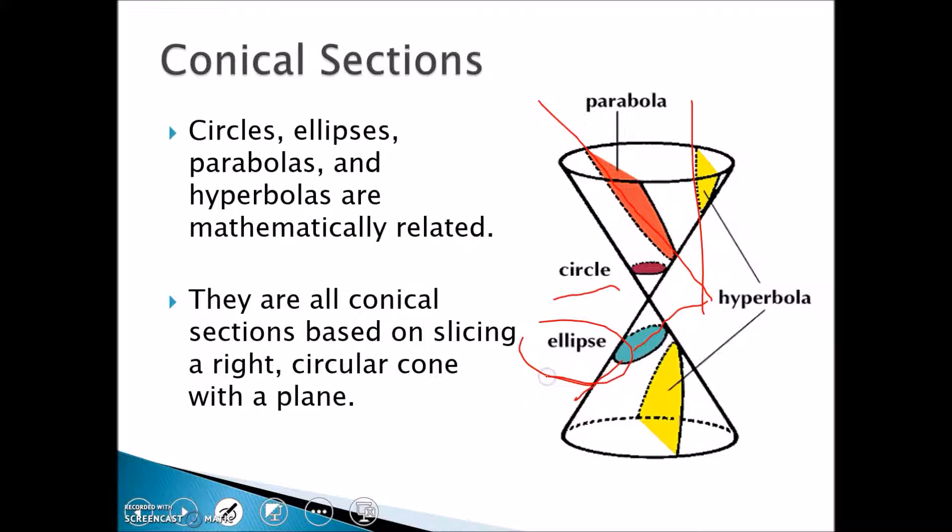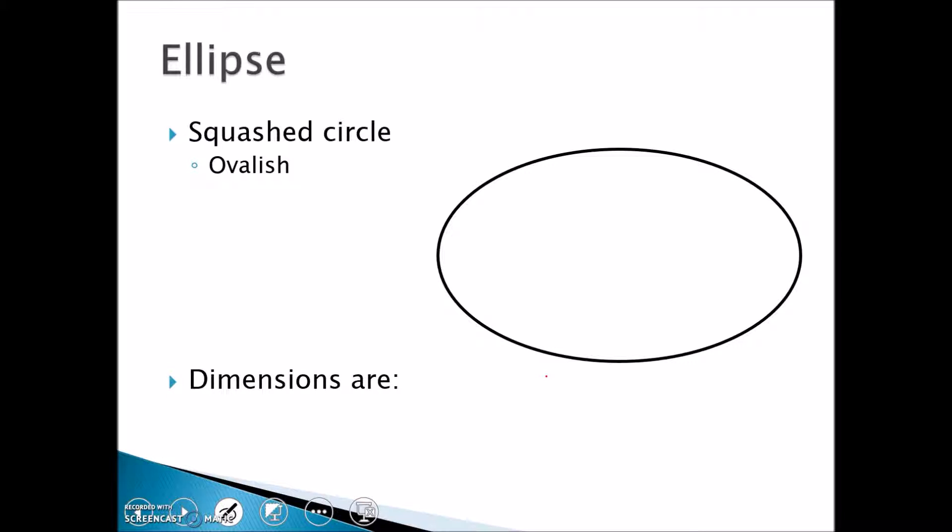An ellipse is a squashed circle, and I like to refer to it as being oval-ish. There's a couple of critical dimensions associated with the ellipse. One of them is the semi-major axis and the other one is the semi-minor axis, and we're going to refer to these terms as we talk about the ellipse tonight.